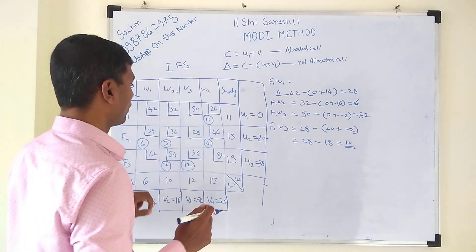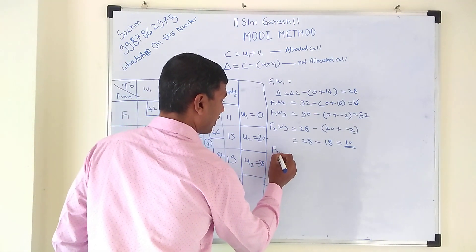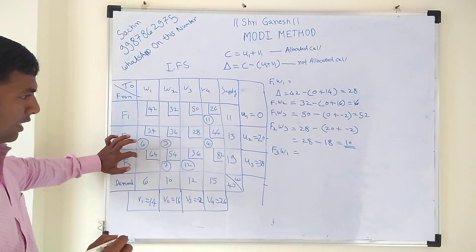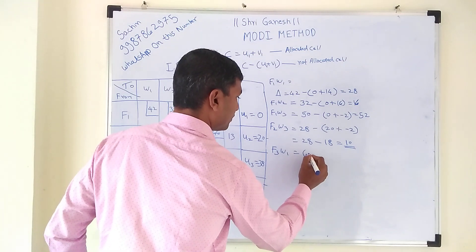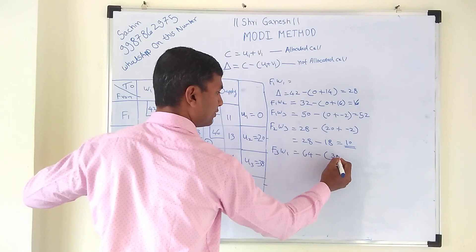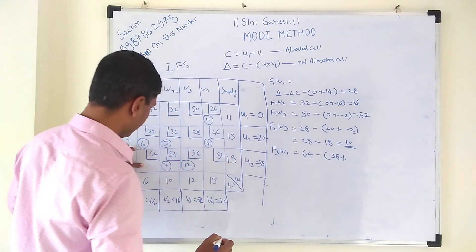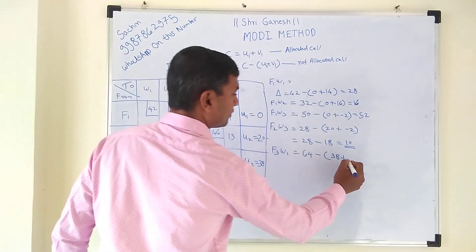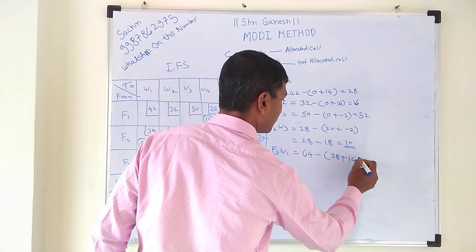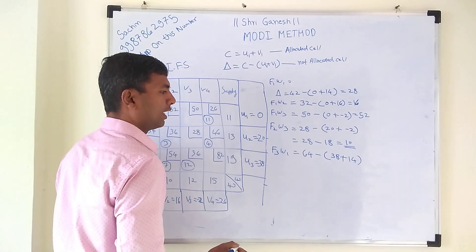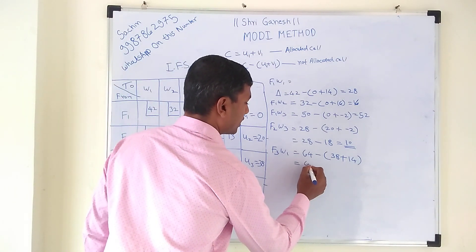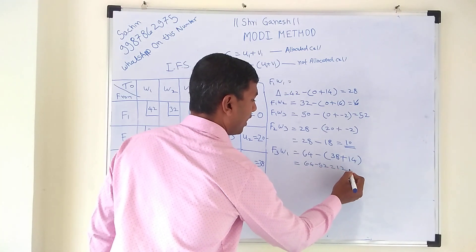Next is F3W1: delta = 64 − (u3 + v1) = 64 − (38 + 14) = 64 − 52 = 12.